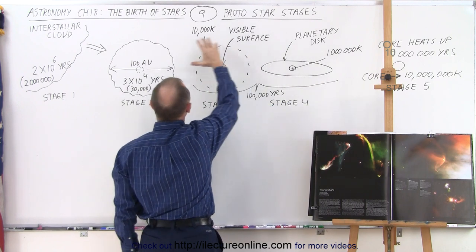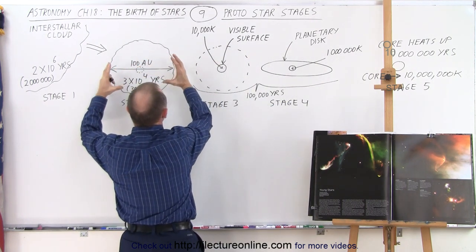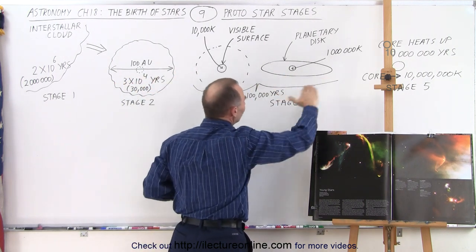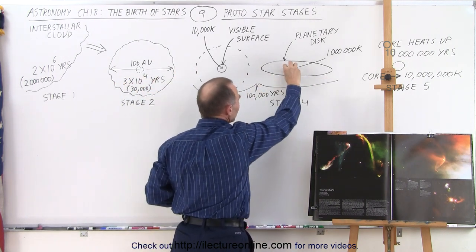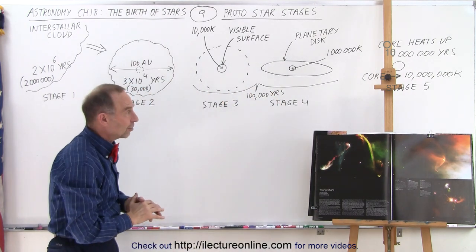This process where we go from something the size of the solar system but still in a spherical shape down into a disc shape with a planetary disc and an emerging star at the center, that stage three and four takes about 100,000 years.